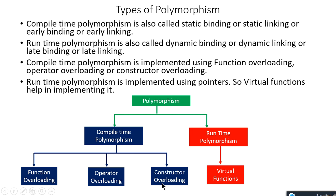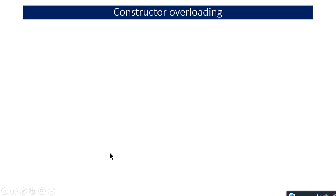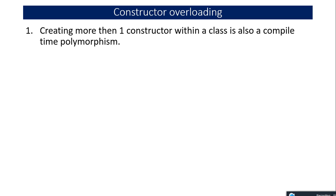You can draw this diagram in your exams: polymorphism divides into compile-time polymorphism and runtime polymorphism. Compile-time is further divided into function overloading, operator overloading, and constructor overloading, while runtime polymorphism has only one type — virtual functions. Now let's start with constructor overloading. I will use the previous program to explain constructor overloading.